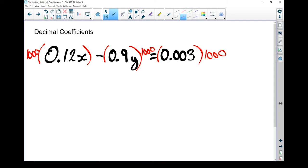When I multiply those out, 0.12 times 1,000 gives me 120x. Minus 0.9 times 1,000 is going to give me 900y. And 0.003 times 1,000 is just going to give me 3. No more decimals in my equation.